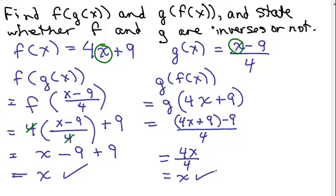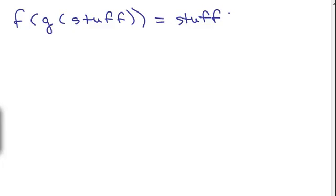Now keep in mind, it doesn't matter what you plug in to the function. In other words, if you put f of g of stuff, you're going to get the stuff out. So f of g of some stuff, whatever it happens to be if f and g are inverses, whatever you put in, that's what comes out. That happens if f and g are inverses. So let's just do that problem, put in some stuff, whatever you feel like.